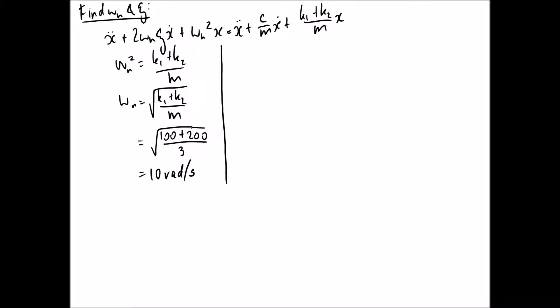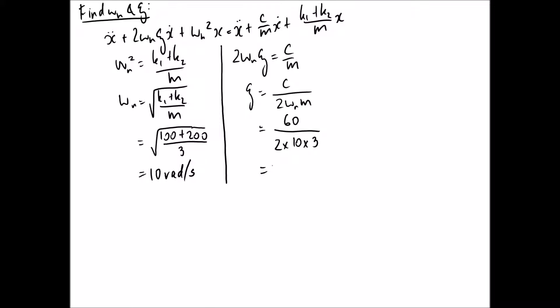Now we find the damping ratio. We know 2·ωn·ζ = c/m, so rearranging we get ζ = c/(2·m·ωn). With c equal to 60 and ωn equal to 10, substituting in gives a damping ratio equal to one. This corresponds to the critically damped case.